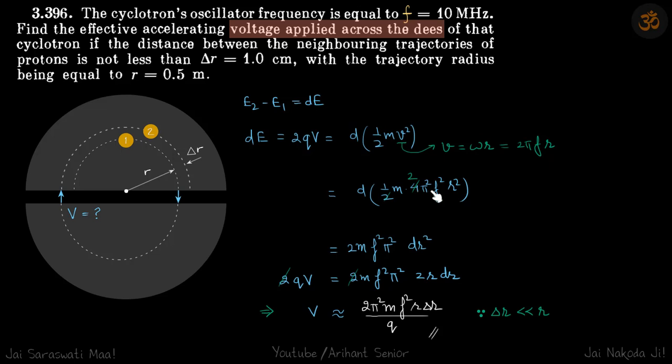We can put 2πfr here. These things are constant: ½m·(2π)²f². We'll take them out. This becomes V is equal to 2mπ²f²·2r·dr. We are using dr because Δr is very less compared to r. Because of that reason, we can approximate this to be r·Δr, and that is our answer.